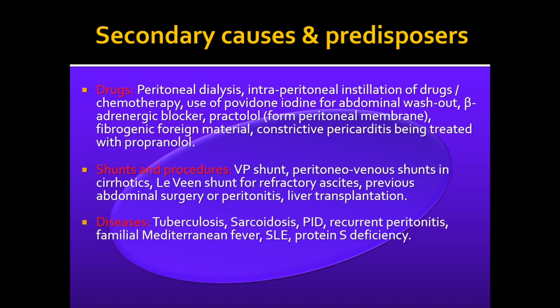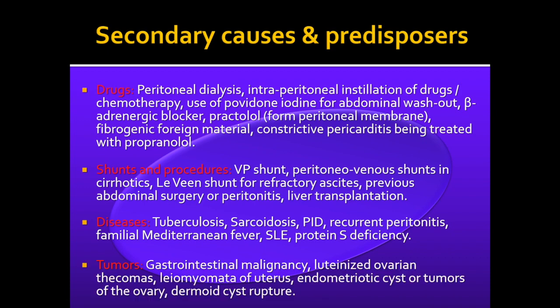Diseases involving the peritoneum such as tuberculosis, sarcoidosis, pelvic inflammatory disease, recurrent peritonitis, familial Mediterranean fever, SLE, and protein S deficiency are also important causes. Tumours such as gastrointestinal malignancy, luteinized ovarian thecomas, leiomyoma of the uterus, endometriotic cysts, tumours of the ovary, and dermoid cyst rupture which can incite peritonitis can also lead to abdominal cocoon formation.